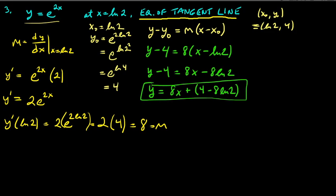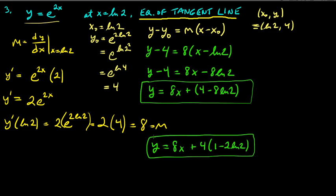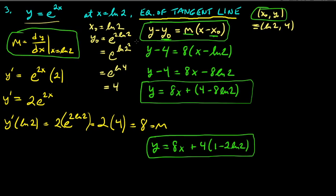You could factor out a 4 or write 2 ln 2 as ln 4, but leaving it as y = 8x + 4 - 8 ln 2 is fine. Remember: the equation of any line needs slope m and a point (x₀, y₀). For a tangent line, you find m using the derivative at that point.